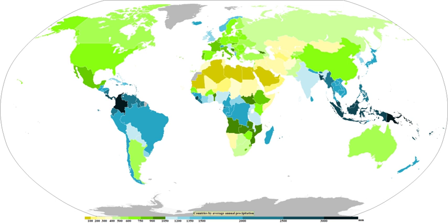A concept used in precipitation measurement is the hydrometeor. Any particulates of liquid or solid water in the atmosphere are known as hydrometeors. Formations due to condensation, such as clouds, haze, fog, and mist, are composed of hydrometeors. All precipitation types are made up of hydrometeors by definition, including virga, which is precipitation that evaporates before reaching the ground. Particles blown from the Earth's surface by wind, such as blowing snow and blowing sea spray, are also hydrometeors, as are hail and snow.